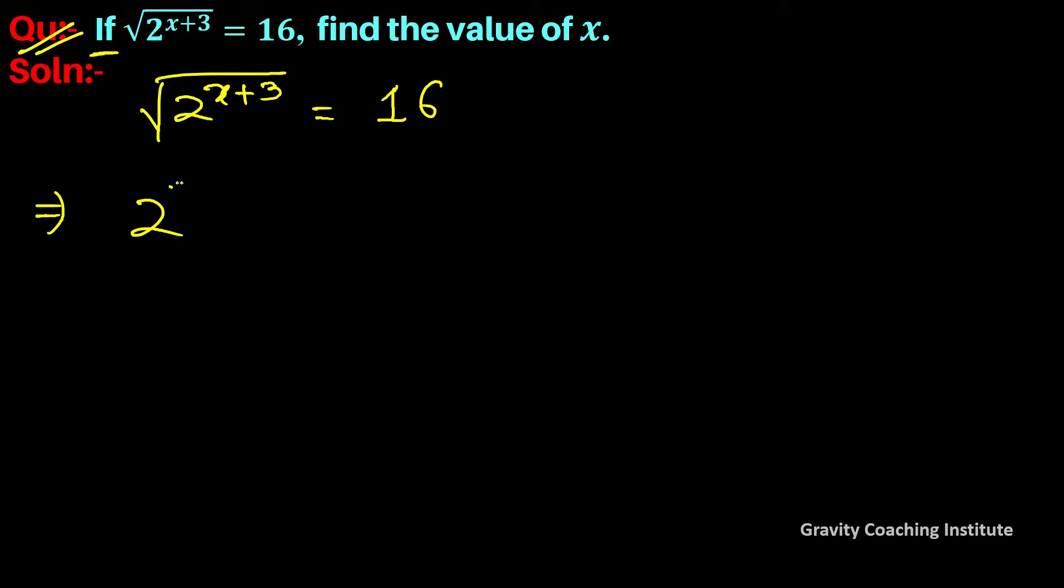(2^(x+3))^(1/2) = 16. We'll change 16 to power form as 2^4. So this implies that when we have power to power, they multiply: x+3...